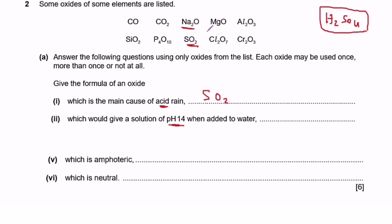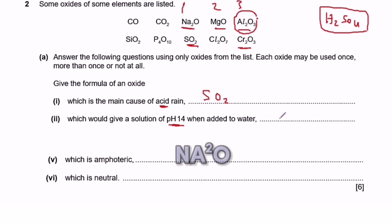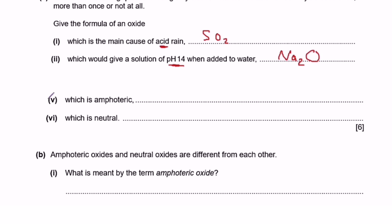We need a basic oxide that produces a strong alkali. Magnesium oxide is basic, aluminium oxide is not basic. Comparing sodium, magnesium, and aluminium in the periodic table: sodium is group 1, magnesium group 2, aluminium group 3. Since aluminium oxide is not basic, and sodium (group 1) is stronger than magnesium (group 2), the answer is sodium oxide — Na₂O.